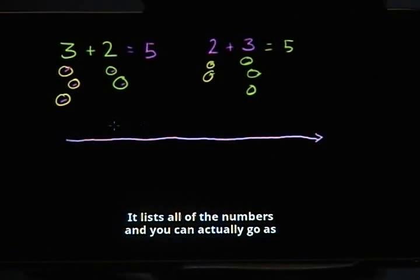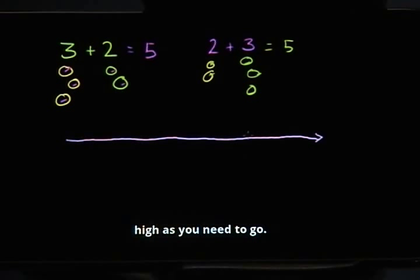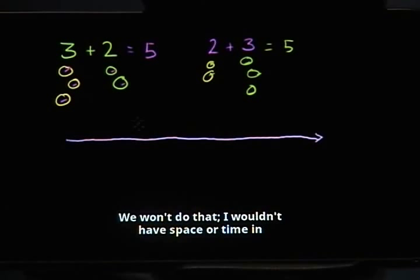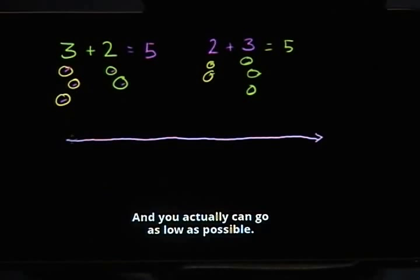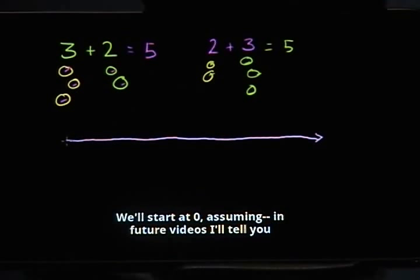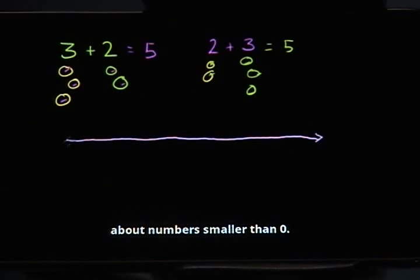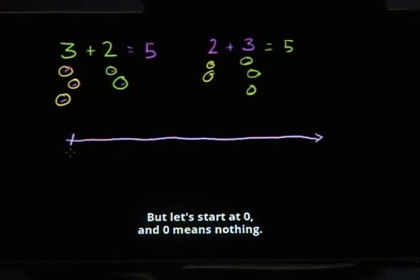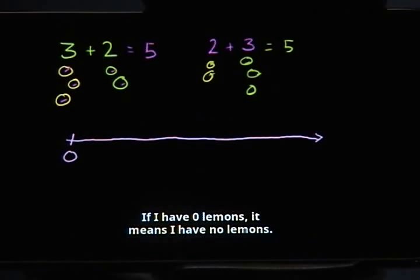You can actually go as high as you need to go — you could go up to a million, gazillion, trillion. We won't do that. And you can actually go as low as possible. We'll start at 0. And 0 means nothing. If I have 0 lemons, it means I have no lemons.